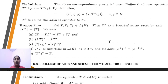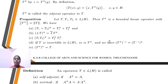Next definition: adjoint operator. The correspondence y → z is linear. The linear operator defined by T* by z = T*(y). By definition, ⟨T(h), y⟩ = ⟨h, T*(y)⟩ for h, y belonging to H. Then T* is called the adjoint operator of T.